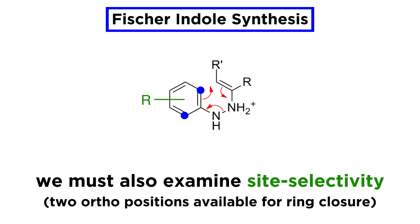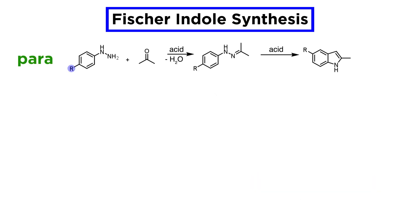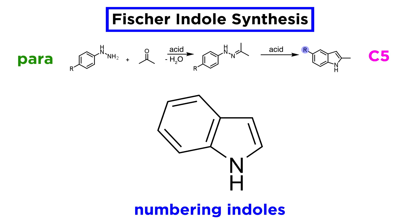But when introducing substitution, there is another complicating issue: that of the resulting site selectivity. If the aryl hydrazine is para-substituted, given the symmetry of the molecule, the substituent can only end up at the C5 position of the indole. When numbering indoles, the nitrogen is always position 1, then we number around the five-membered ring, and then continuing to the other, skipping the two carbons involved in both rings.